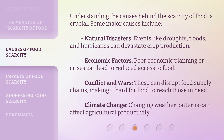Economic factors: poor economic planning or crises can lead to reduced access to food. Conflict and wars can disrupt food supply chains, making it hard for food to reach those in need. Climate change and changing weather patterns can also affect agricultural productivity.